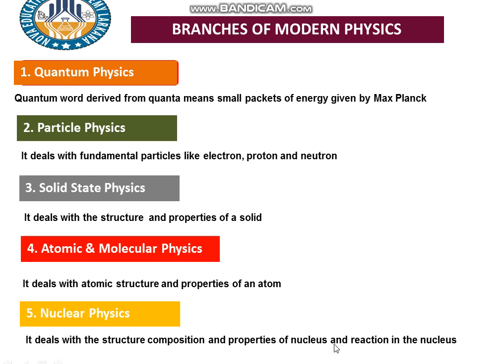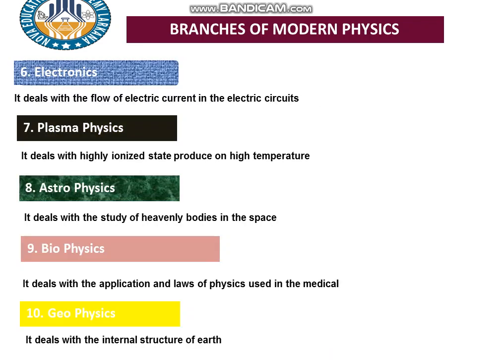The nuclear reactions are of two types: nuclear fission and nuclear fusion. In nuclear fission, a heavy nucleus is split into daughter elements. In nuclear fusion, daughter elements combine to form a parent nucleus. The atom bomb is an application of nuclear fission, and enormous energy is released in these reactions.